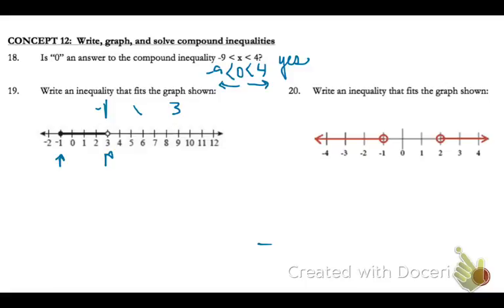So since the shaded area is in between, that means it's going to be less than 3, and there's no equal to mark. So I'm not going to put a line underneath.